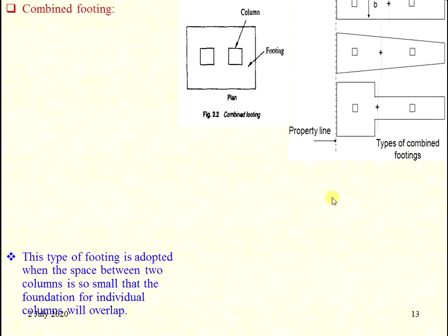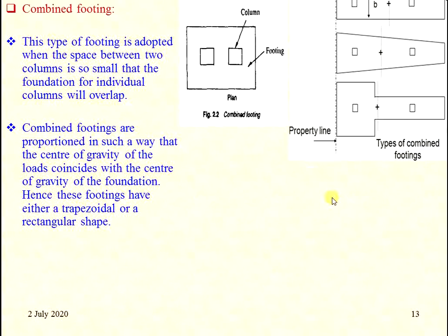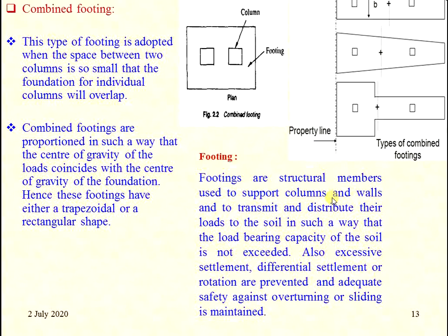Combined footing is adopted when the space between two columns is small such that the foundations for individual columns would overlap. Combined footing is also proportioned so that the center of gravity of the footing coincides with the center of gravity of the loads. Hence, combined footings have either a trapezoidal or rectangular shape, used to support columns and walls and transmit their loads to the soil without exceeding its load-bearing capacity.